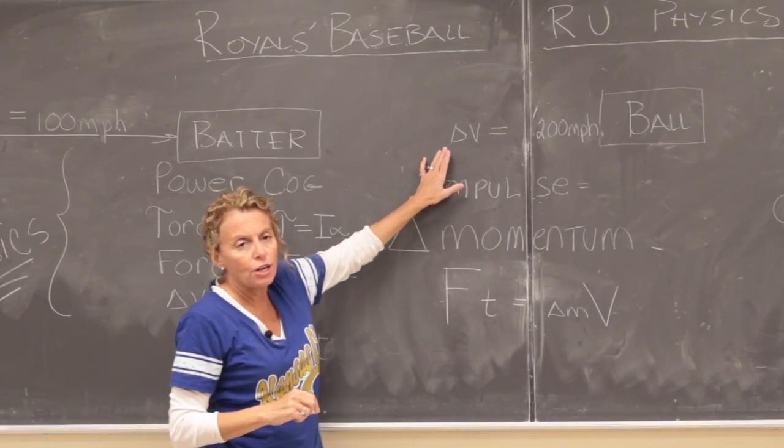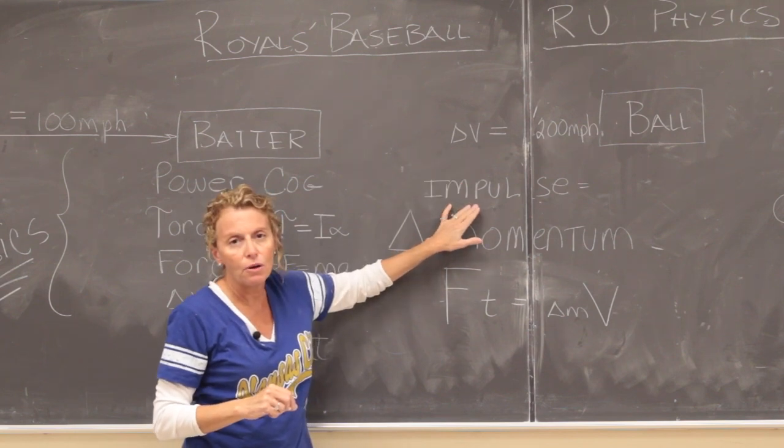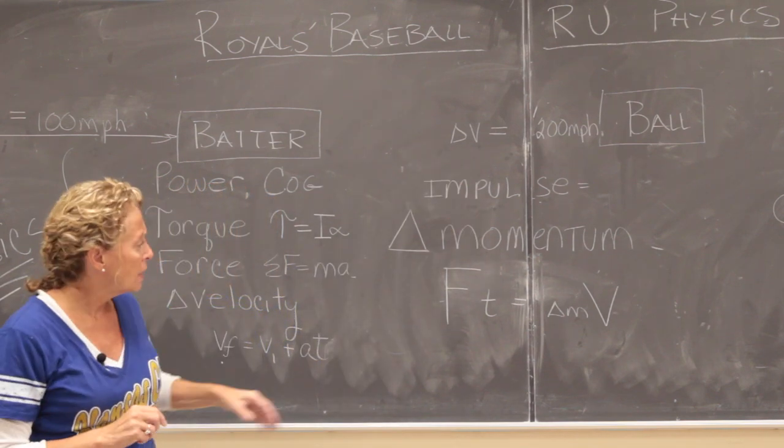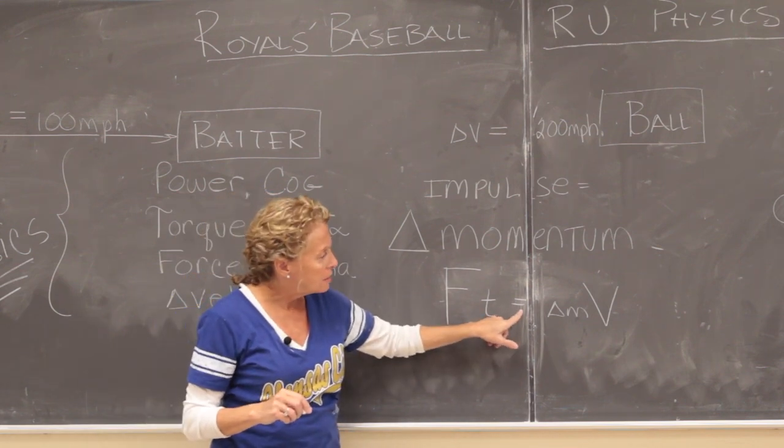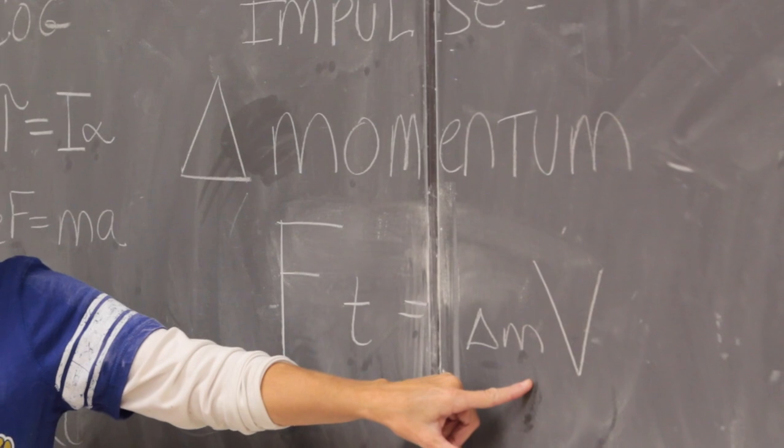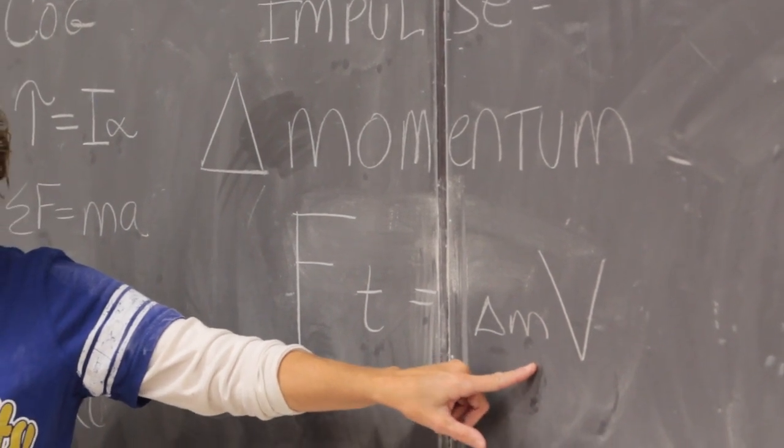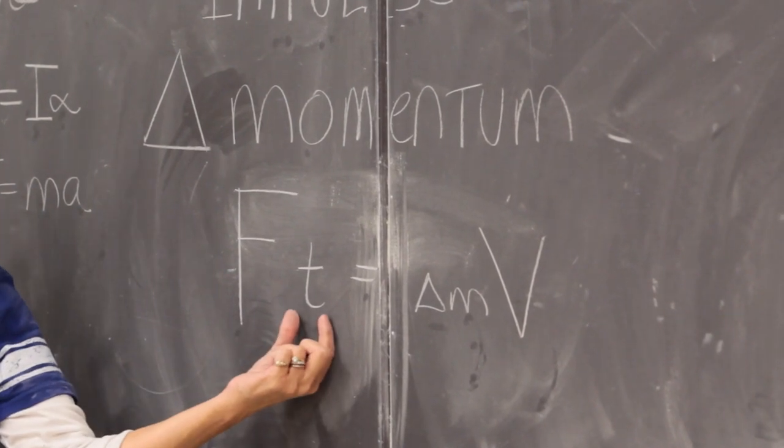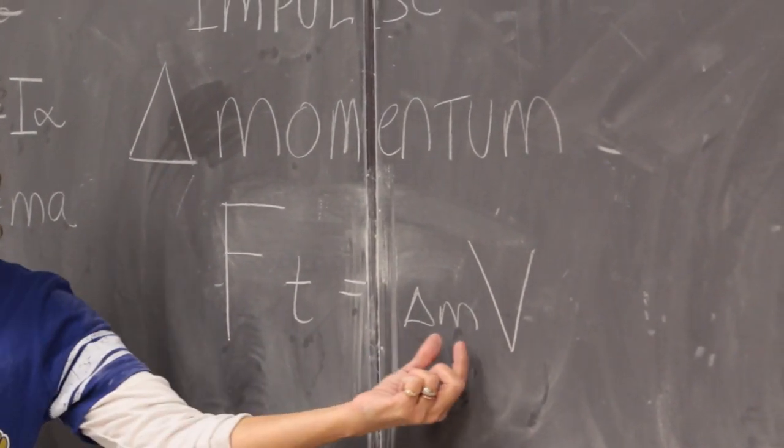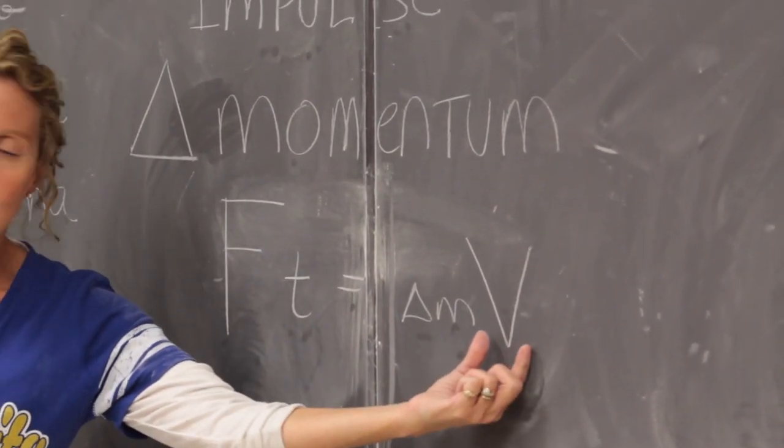What causes a change in velocity is something called an impulse. And an impulse is a force acting over a period of time that causes a change in momentum. So we're changing the momentum of the ball. This is the force of the batter on the ball. This is the time of contact. This is the mass of the ball and this is the change of the velocity.